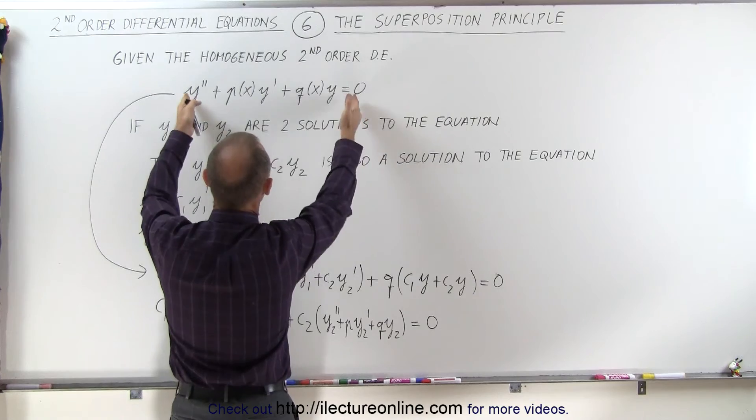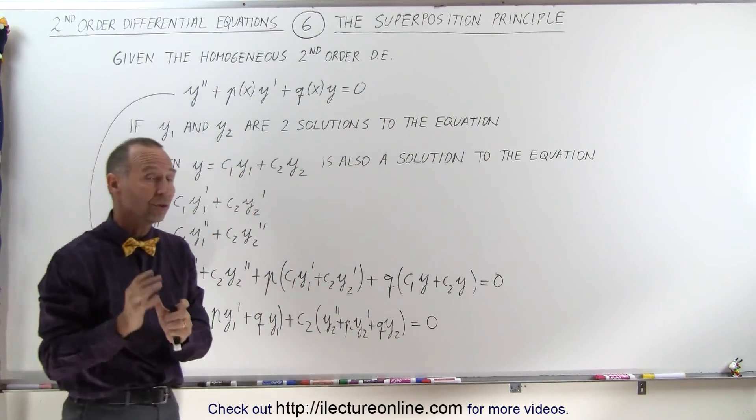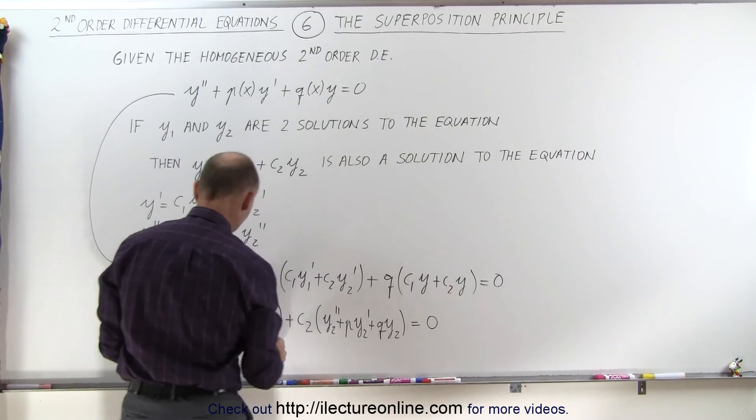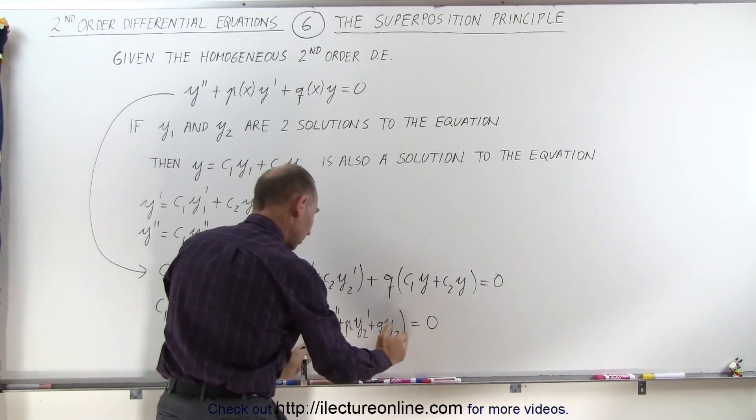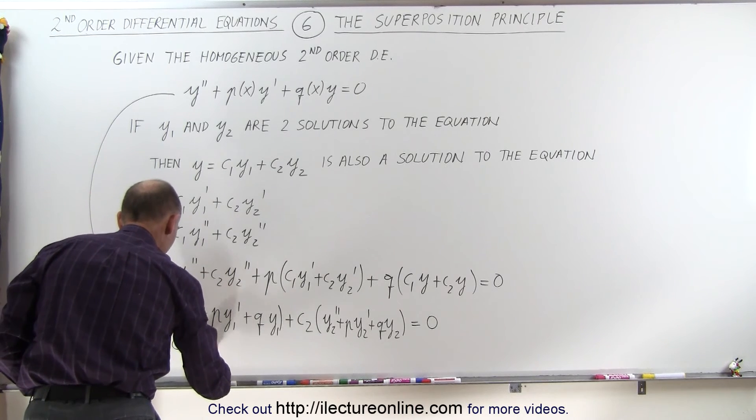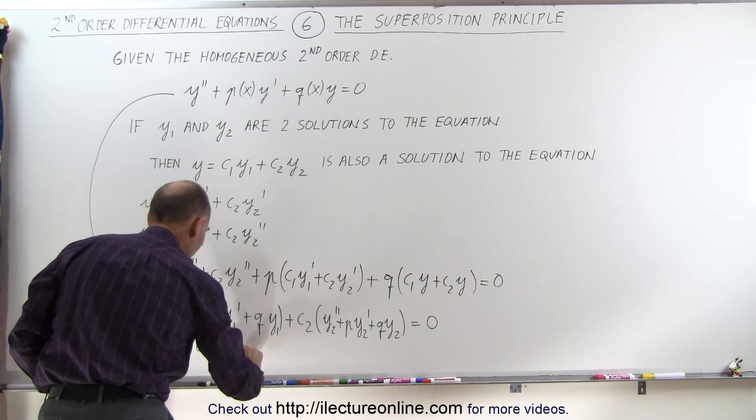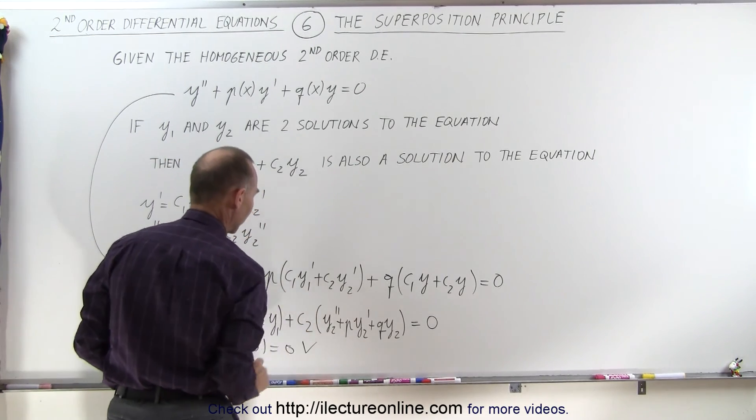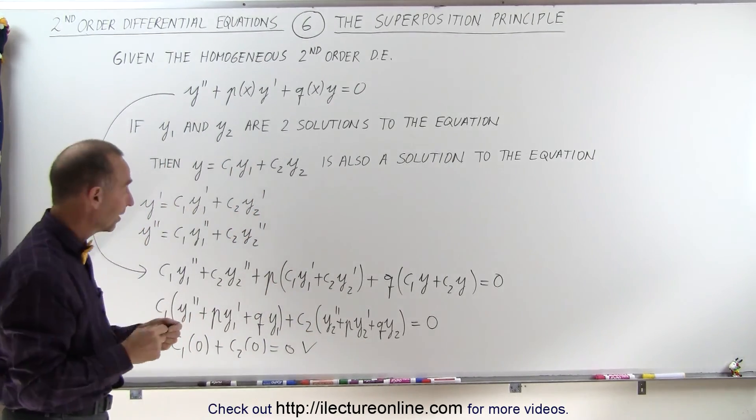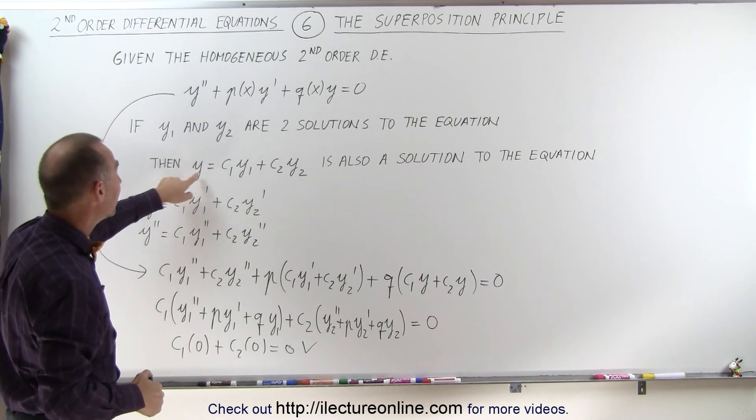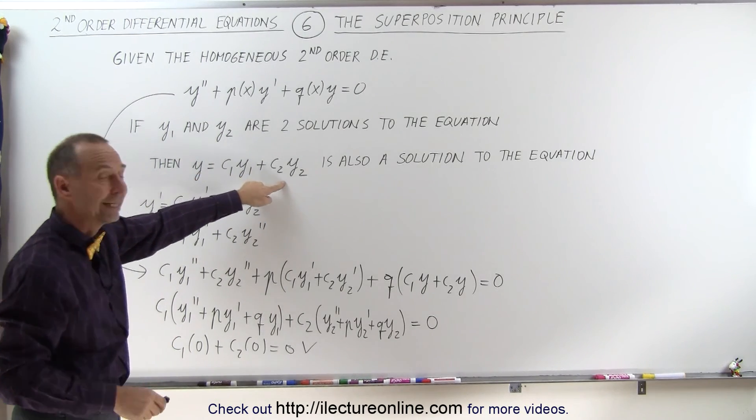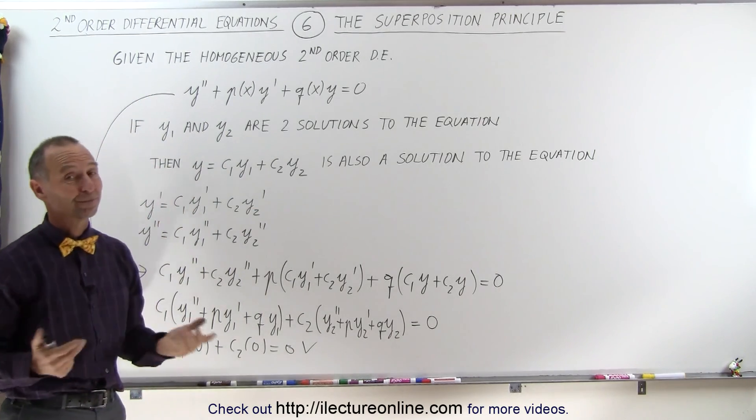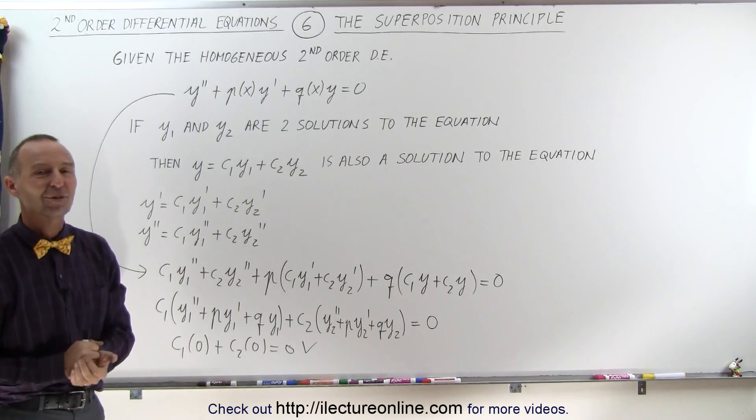But notice that this is exactly the same as that, and again, I know that y2 is a solution to the equation. And since this is equal to zero, that means that this must equal zero and that must equal zero, so therefore I have c1 times zero plus c2 times zero is equal to zero. And that, of course, is a true statement. And if it's a true statement, that means that y equals c1 y1 plus c2 y2 is indeed a solution to the original differential equation. And that's what we mean by the superposition principle.